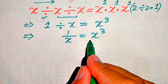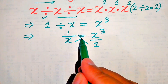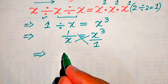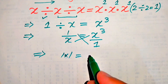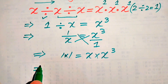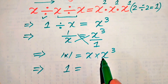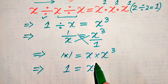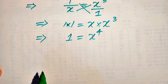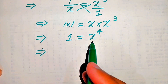Now, since the exponent of the term is one, we cross multiply. When we multiply, we get one multiplied by one equals x multiplied by x cubed. One multiplied by one is one, and x multiplied by x cubed is x to the power of four. After simplification we get one equals x to the power of four.